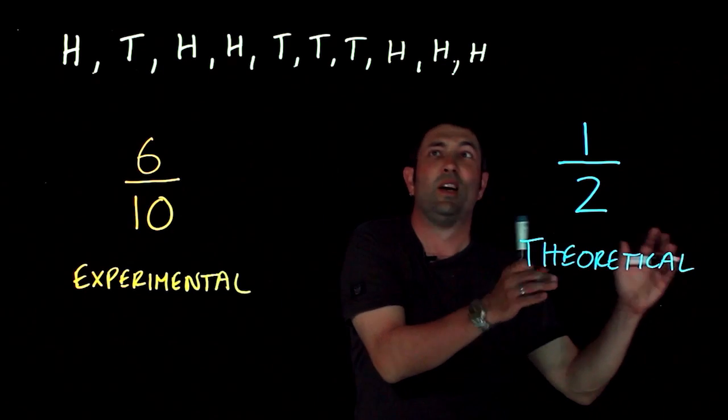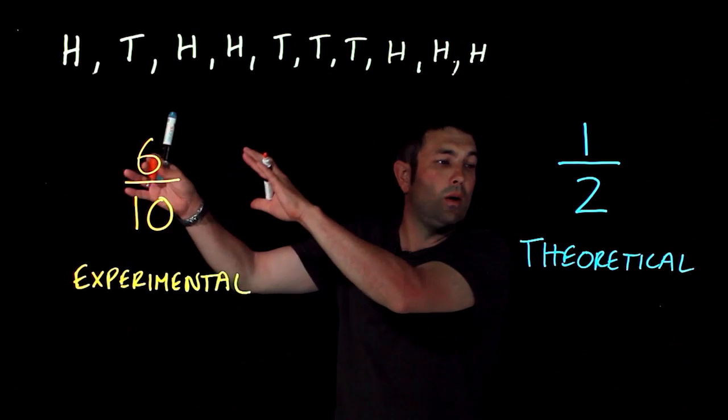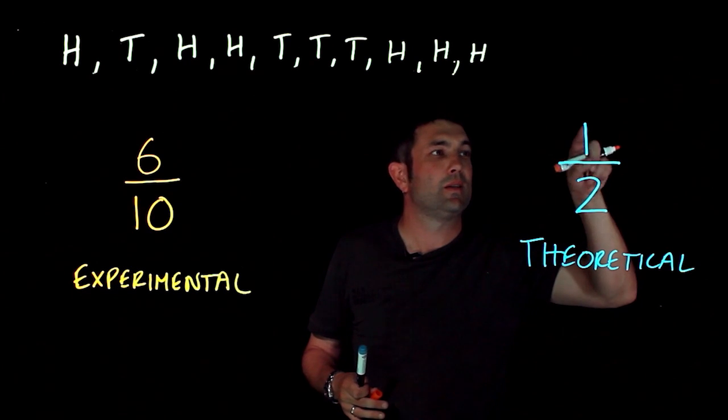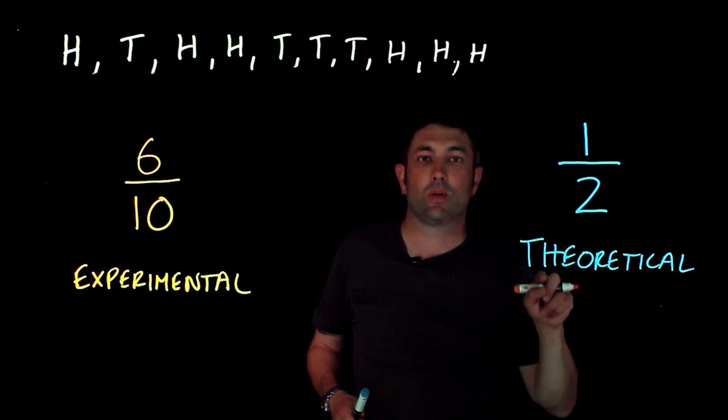Theoretical probability is I forget what's happened before, it really doesn't matter. I know that one side of the coin is going to be heads and there are two sides all together.